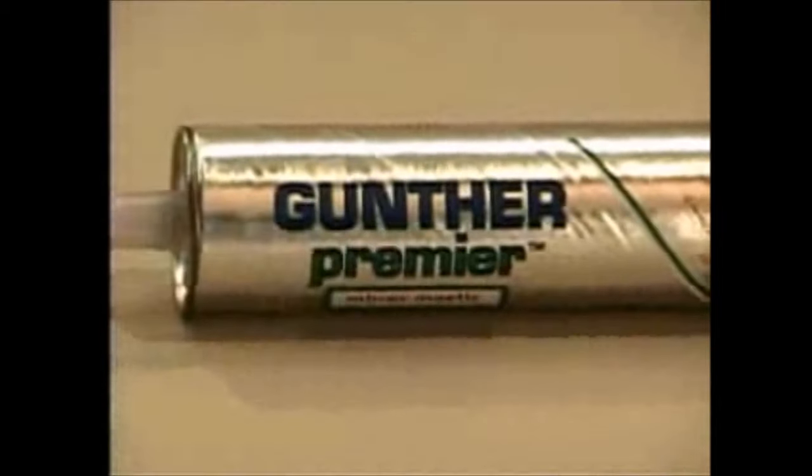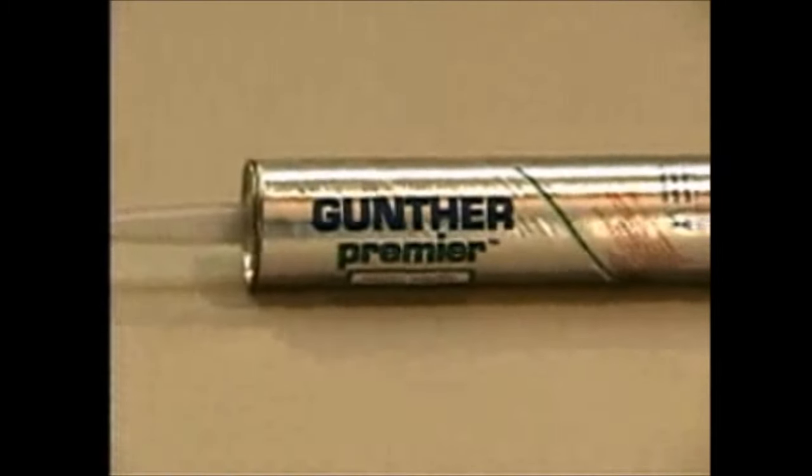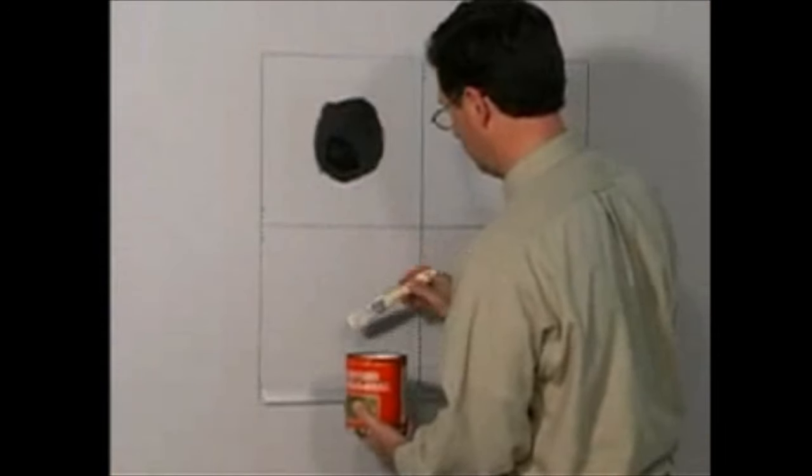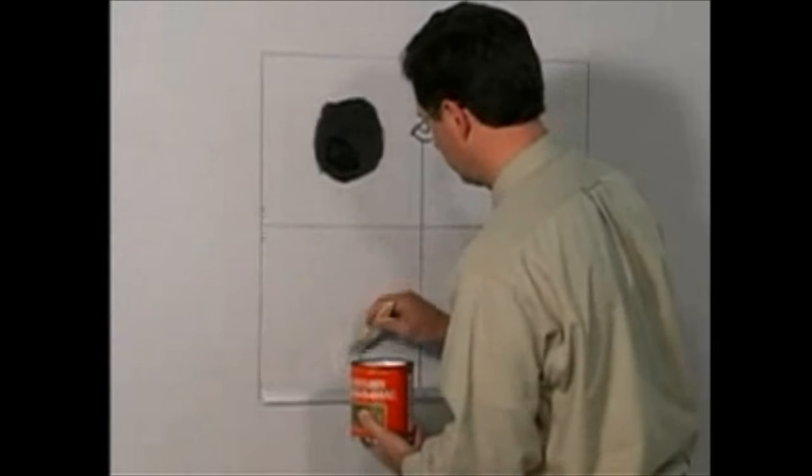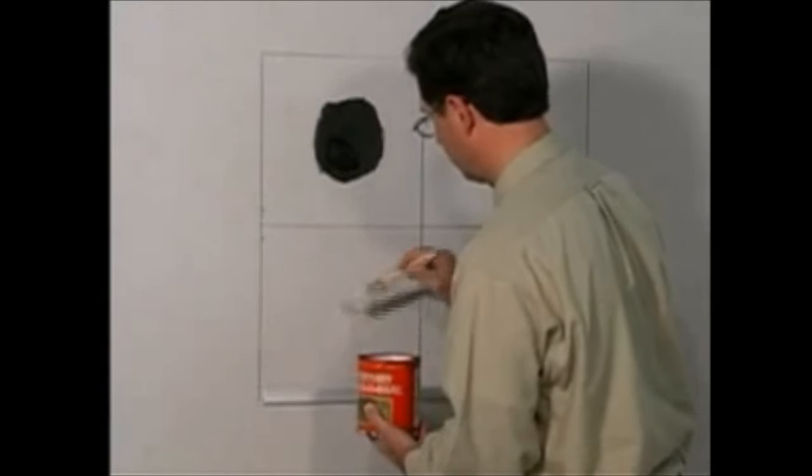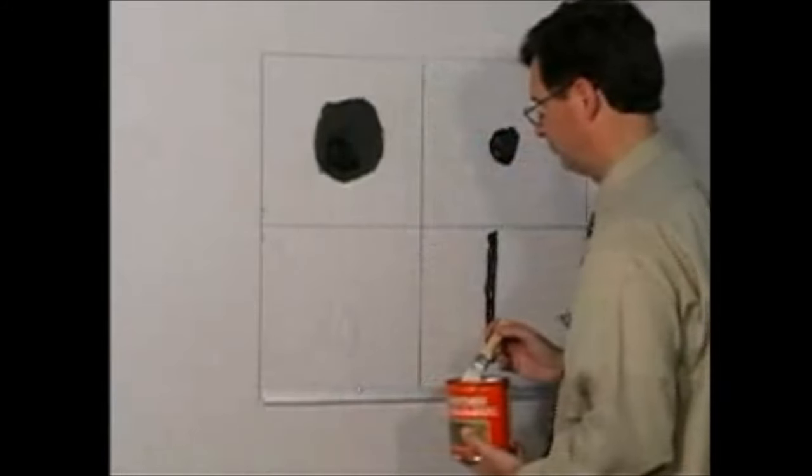Gunther Premier is only packaged in 10.3 fluid-ounce cartridges. It is gray in color and unlike all of the other mastics, it is the only one that can be applied to porous and non-porous substrates with or without a primer. Surfaces still need to be clean and sound, and the use of mechanical fasteners is a must.